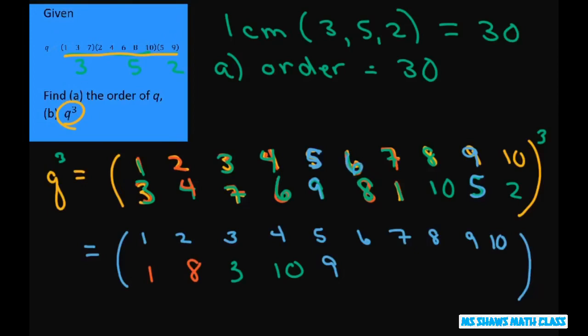6 maps to 8, 8 to 10, 10 to 2. So 6 goes to 2. 7 goes to 1, 1 goes to 3, 3 goes to 7. 8 goes to 10, 10 goes to 2, 2 goes to 4.